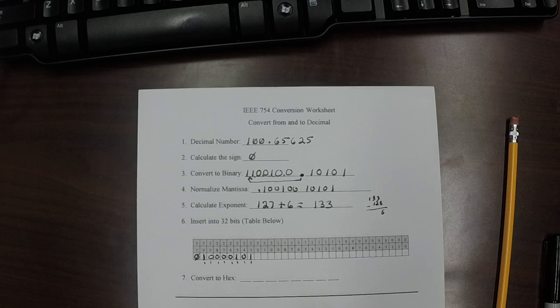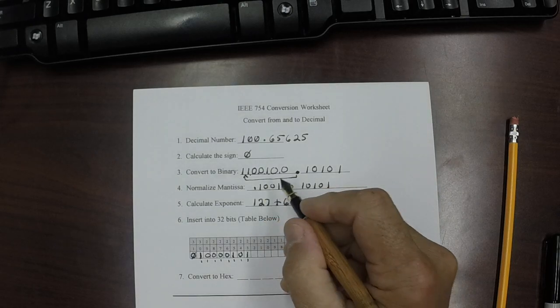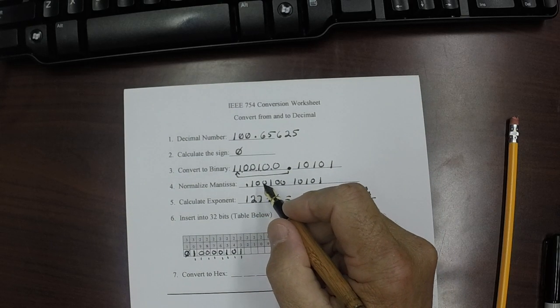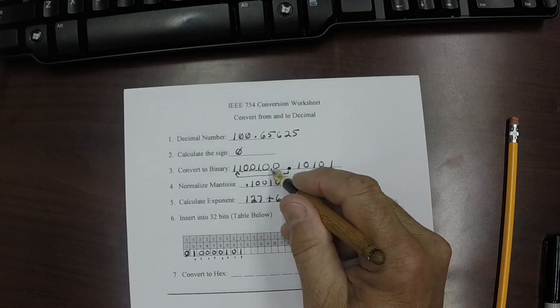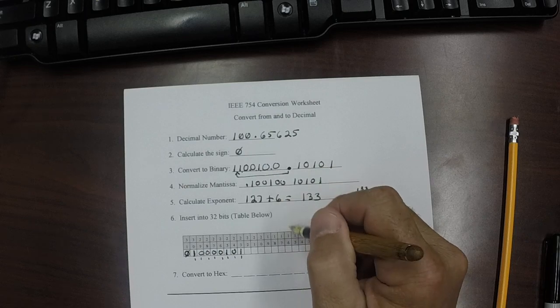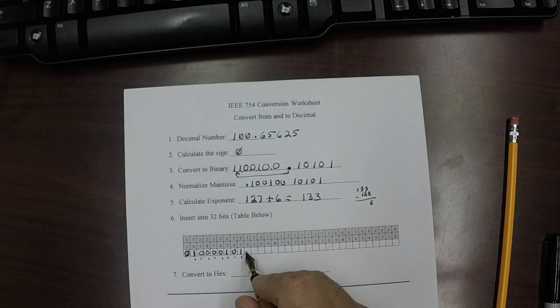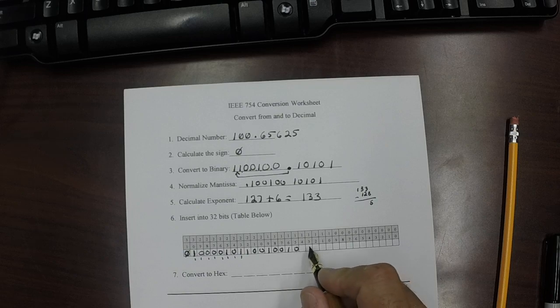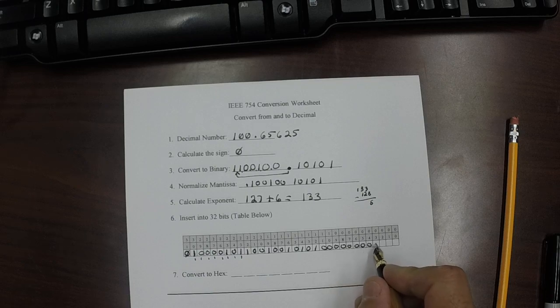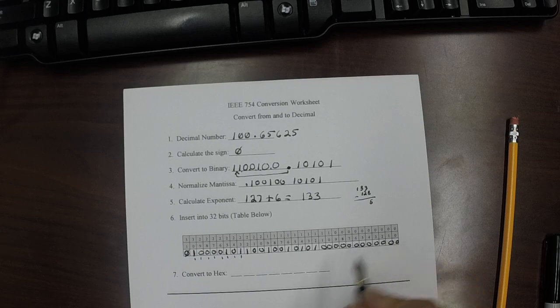So, that is 133 and then what we do is we copy the mantissa or the, what we call a fraction portion of it down into this area right here. So, it's 1, 2 zeros, and a 1, 2 zeros, and a 1, 0, 1, 0, and then a 1, and then the rest zeros.